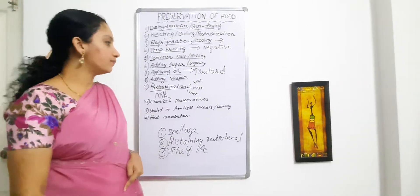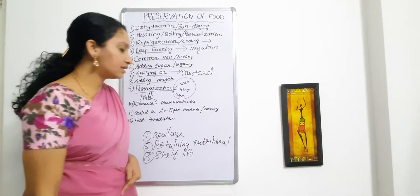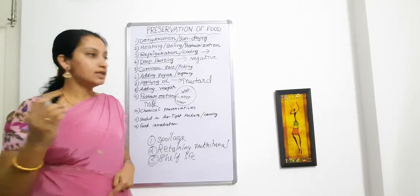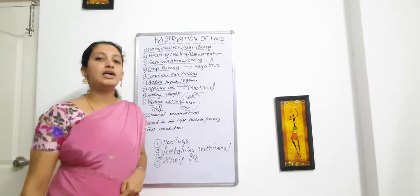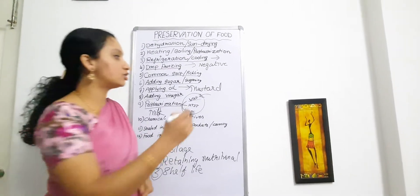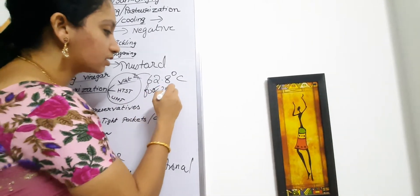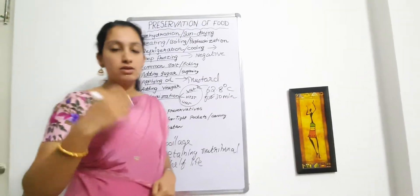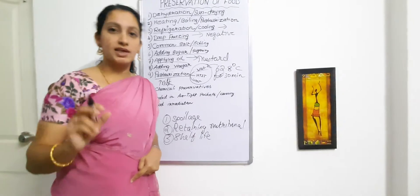We have three types of pasteurization: VAT method, HTST method, and UHT method. In the VAT method, milk is taken into large containers called VATs, where the temperature is maintained at 62.8 degrees Celsius for a holding time of about 30 minutes, so that the microorganisms present in that liquid do not survive and are killed.